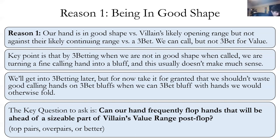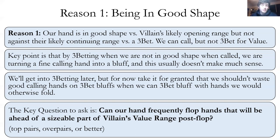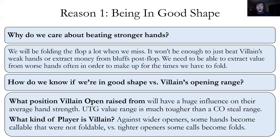When we just flat call, we're going to have to fold over half the time post-flop because of all those disadvantages with the gap concept. So when we do end up making a hand and winning, we can't just win by a little — we need to win a lot of money to justify calling. We need to be able to extract value. So how do we know if we're in good shape versus their opening range? Two things: what position they raised from, and what kind of player villain is.